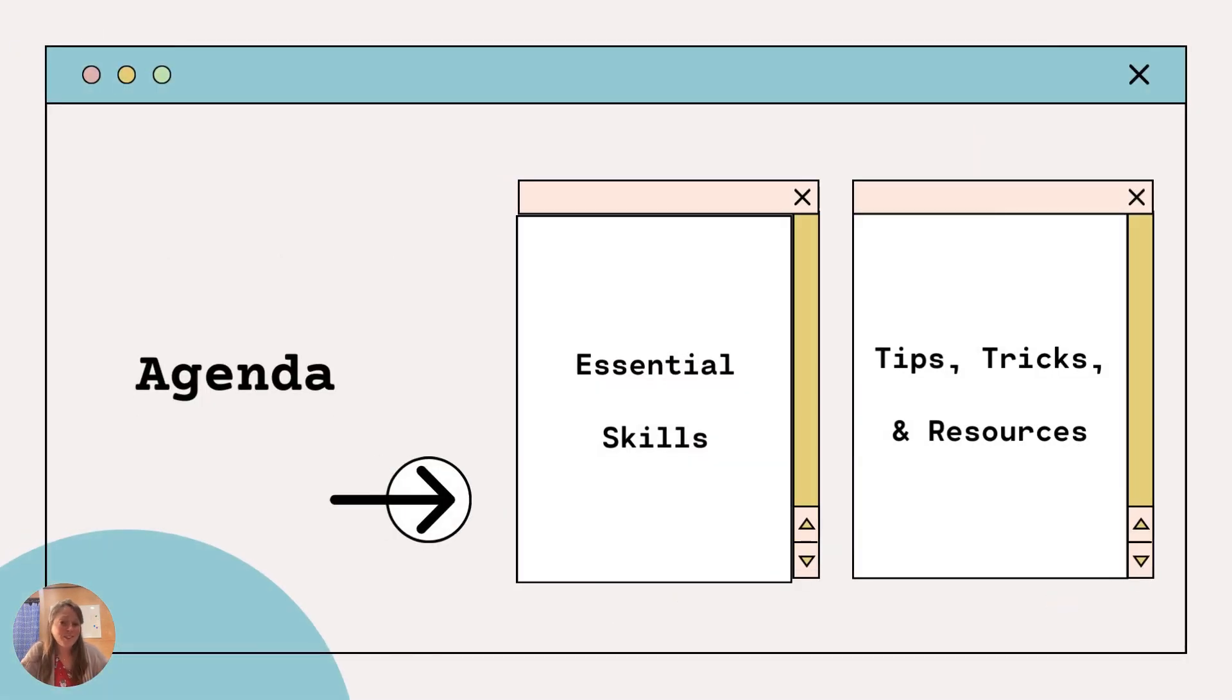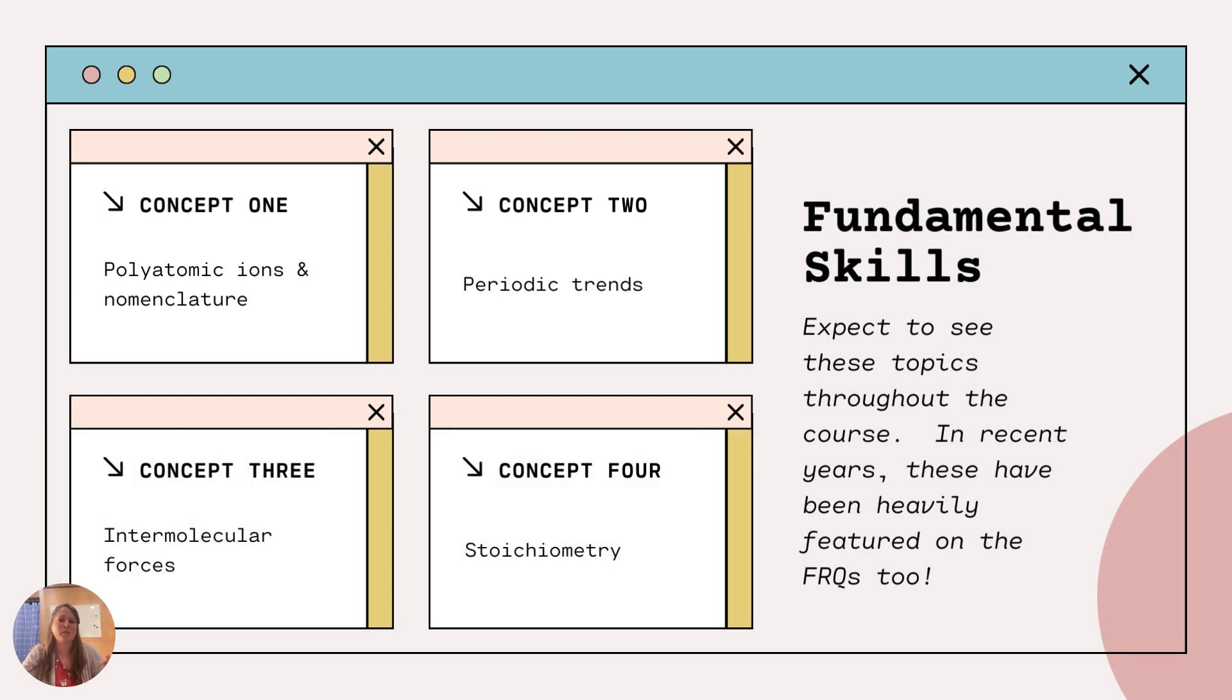All right. So I also don't like to waste time. So if you've seen any of my quick tutorials, I'm going to fly through this because you don't have much time. So I don't want to waste it. So we're going to talk about the essential skills you'll need from Chem 1. And then I'll share all of my favorite survival tips along with my favorite resources. So let's look at those fundamental skills. These are the concepts you're going to see throughout the course.